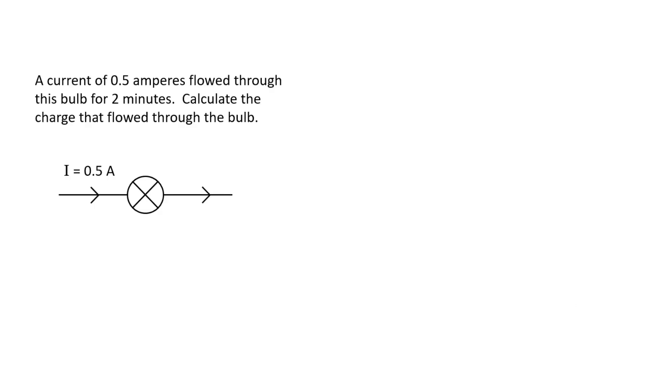In this circuit, 0.5 amperes flowed through this bulb for two minutes and we need to calculate the charge that flowed through the bulb.